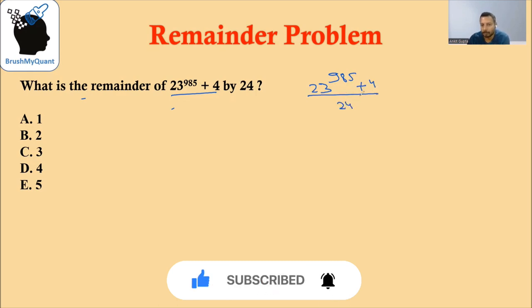Whenever we have this kind of problem, we use the concept of binomial theorem where we break the number 23 into two numbers. One number will be a multiple of 24, another will be a very small number. If we do that, we get this value as 24 minus 1 raised to 985 plus 4 divided by 24.